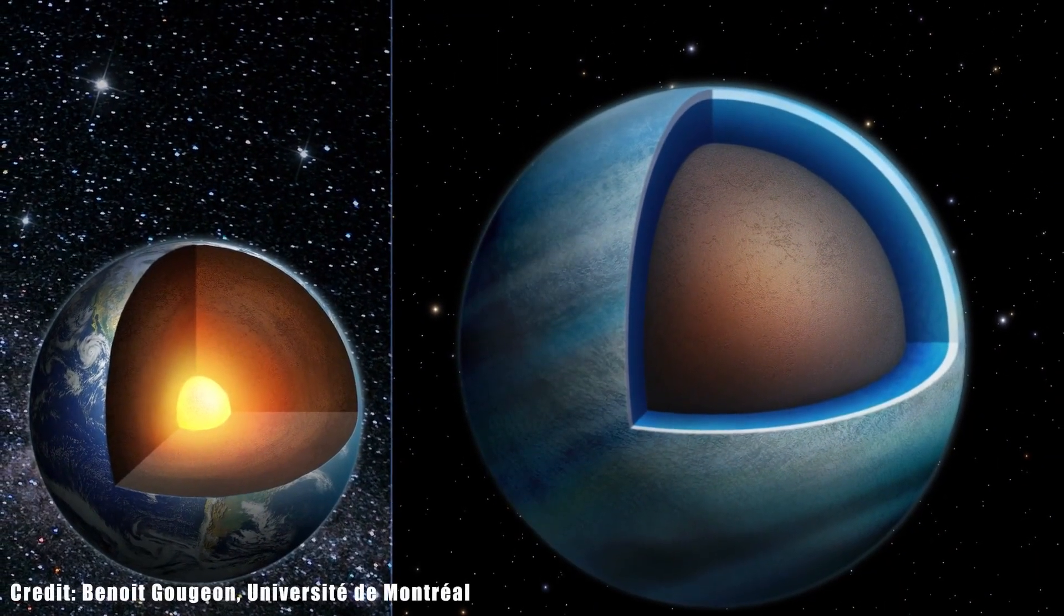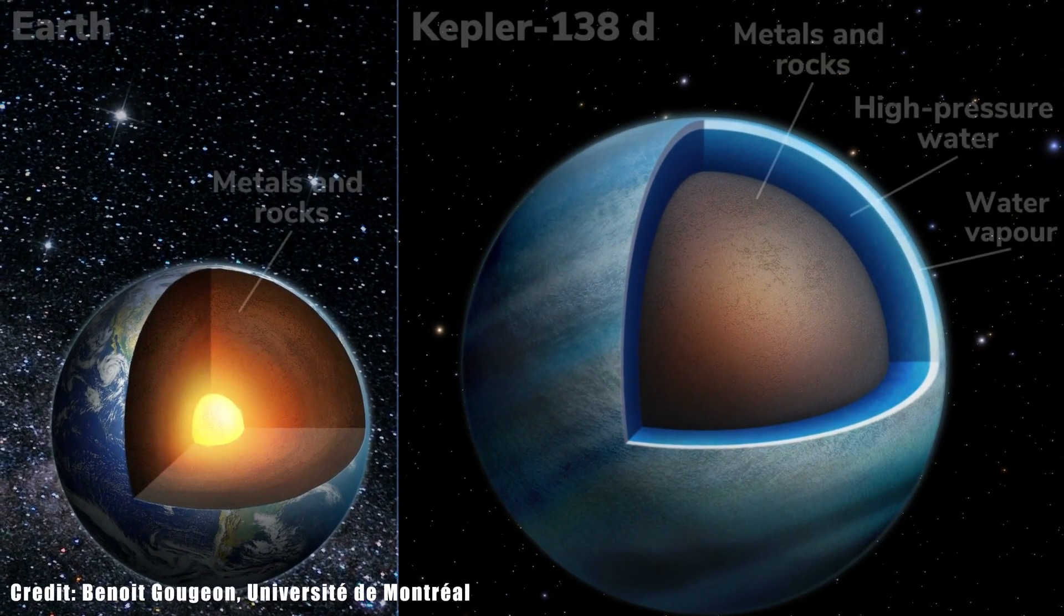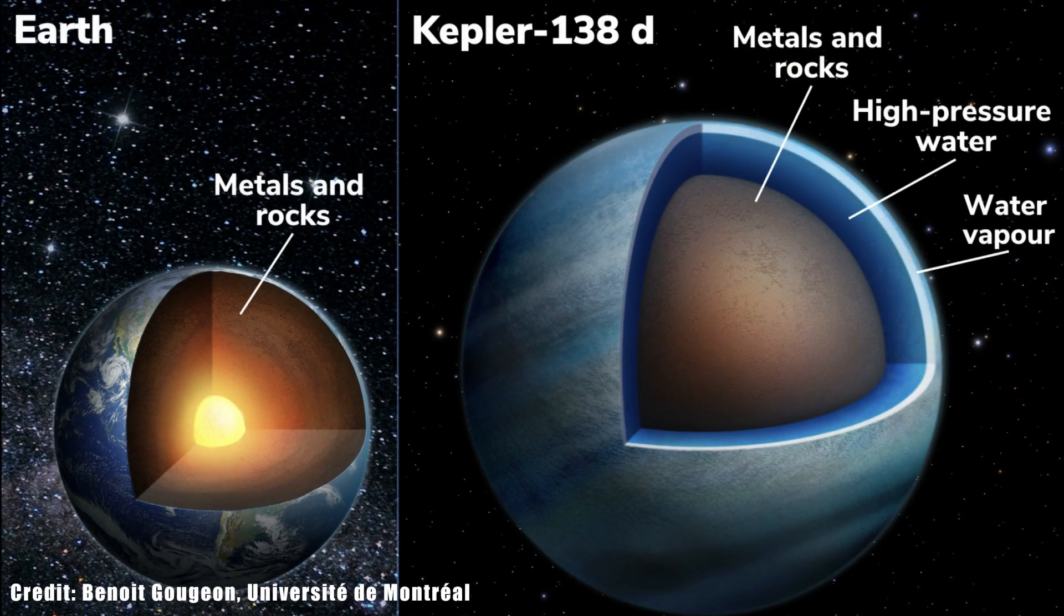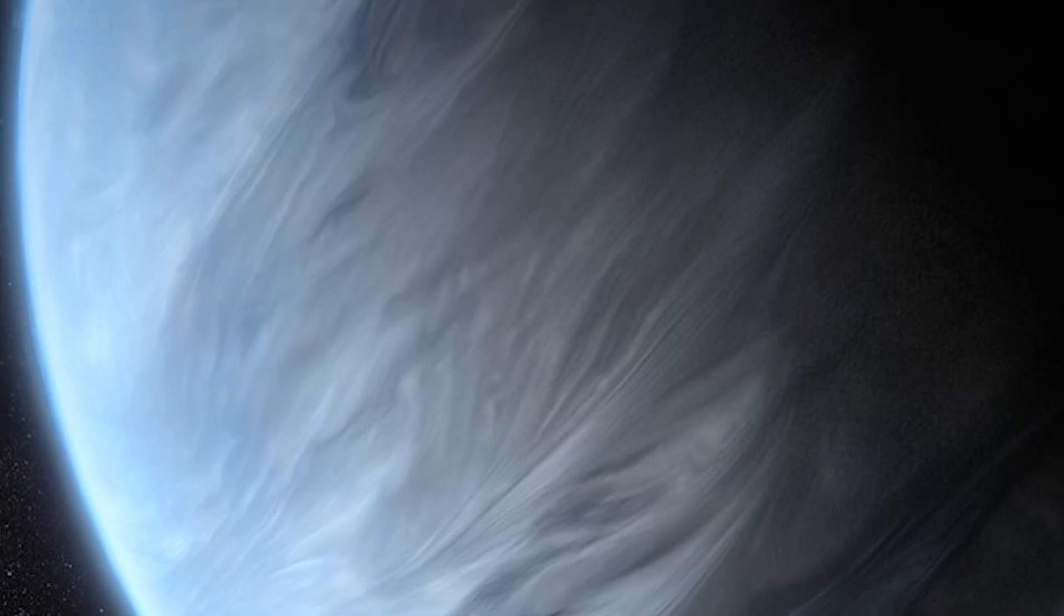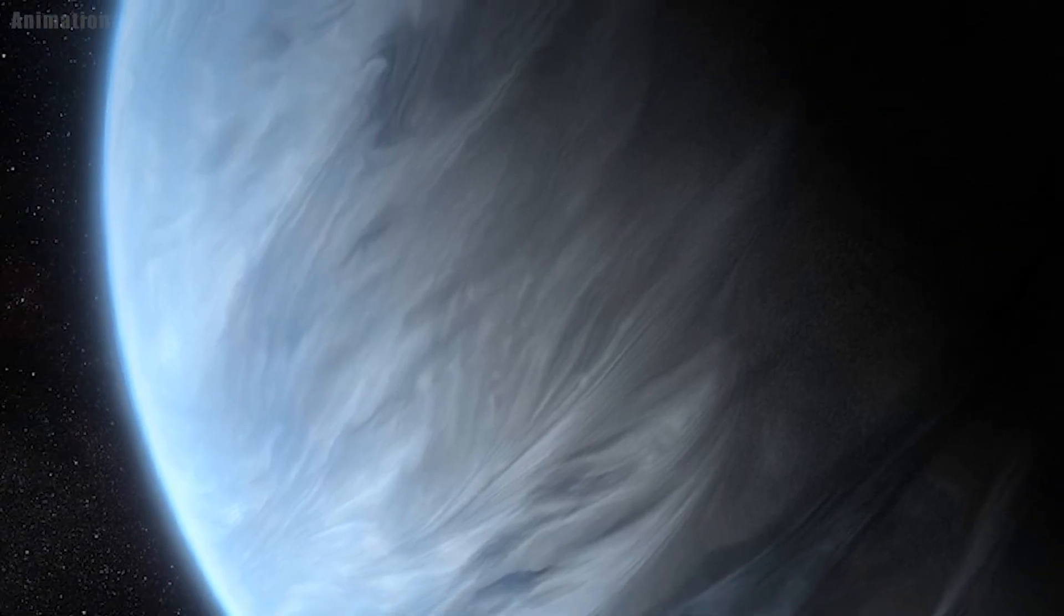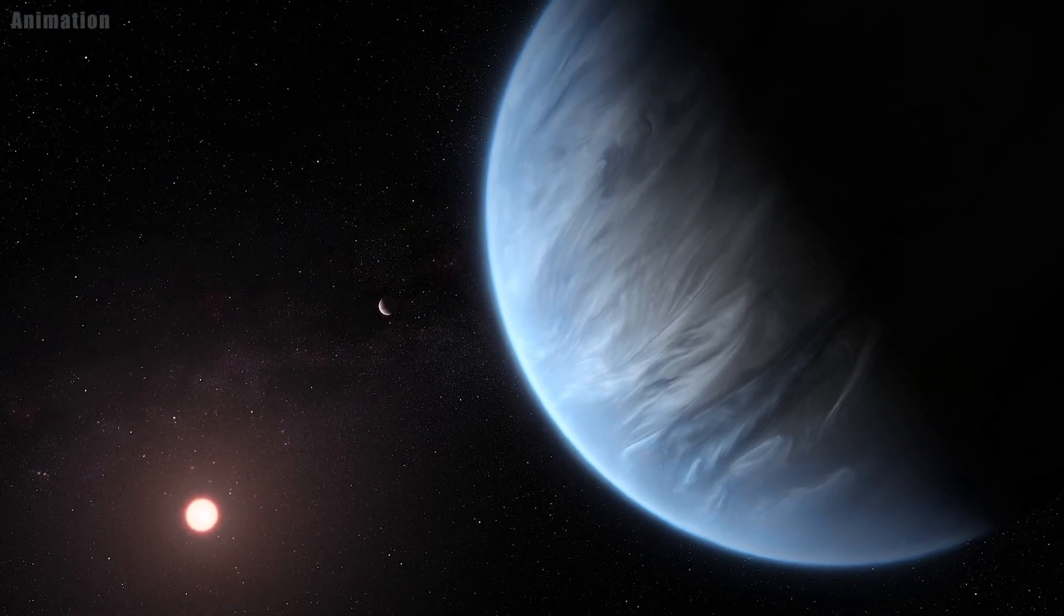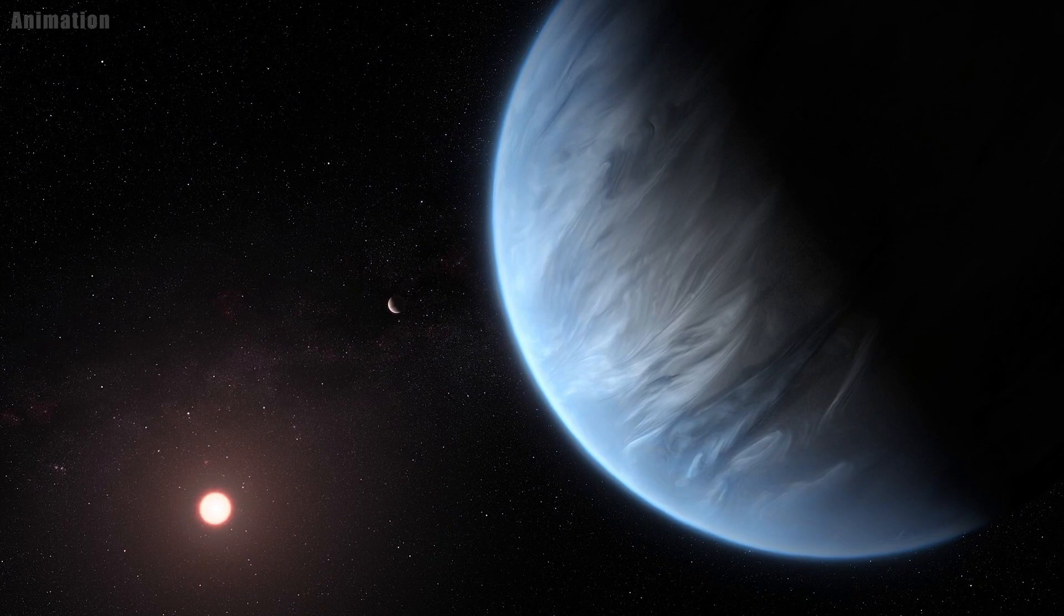Researchers caution that the planets may not have surface oceans like on Earth. The temperature of one planet's atmosphere is likely above the boiling point of water. They expect a thick, dense atmosphere made of steam on this planet, but there could potentially be liquid water at high pressures below it.